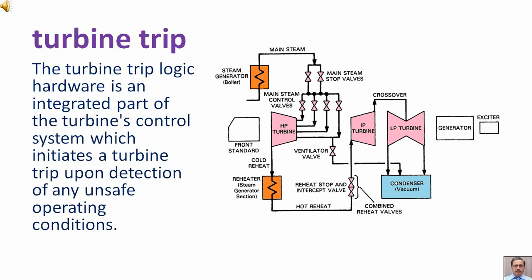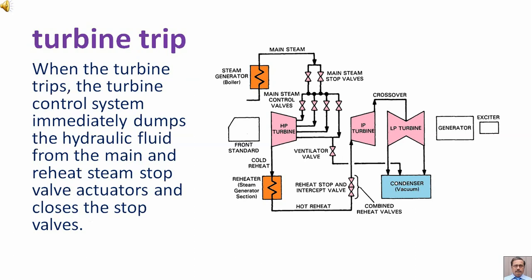Turbine trip. The turbine trip logic hardware is an integrated part of the turbine's control system, which initiates a turbine trip upon detection of any unsafe operating conditions. When the turbine trips, the turbine control system immediately dumps the hydraulic fluid from the main and reheat stop valve actuators and closes the stop valves. Here we have the main steam stop valves and here we have the reheat valves.